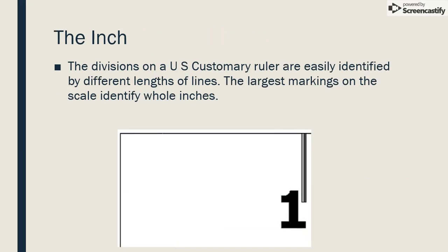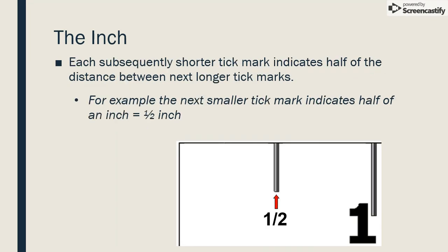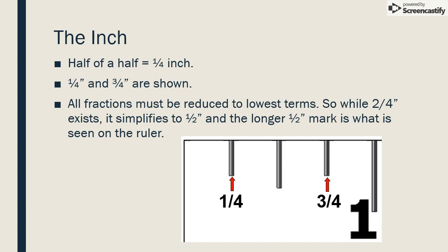The divisions on a U.S. customary ruler are easily identified by different lengths of lines. The largest markings on the scale identify whole inches. Each subsequently shorter tick mark indicates half the distance between the next longer tick marks. For example, the next smaller tick mark indicates half of an inch.